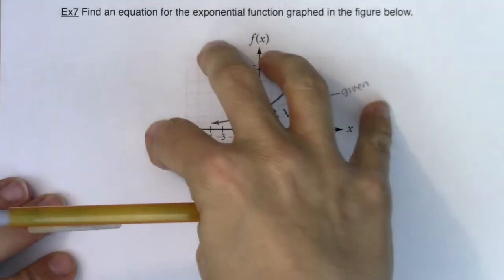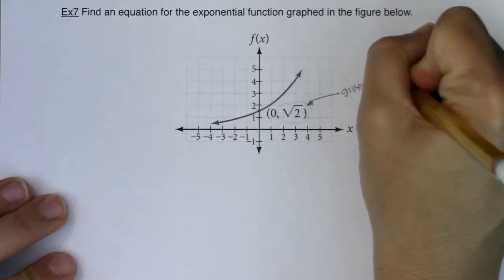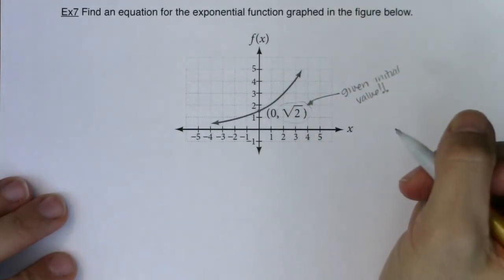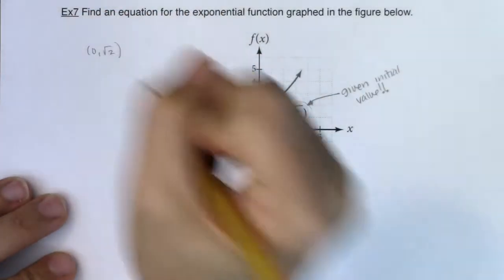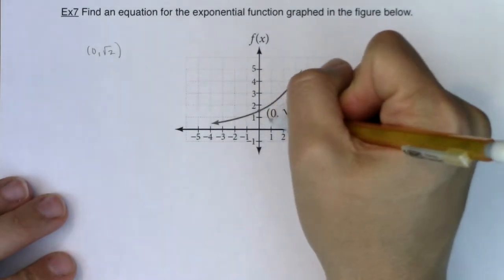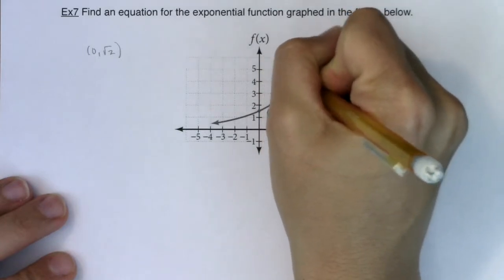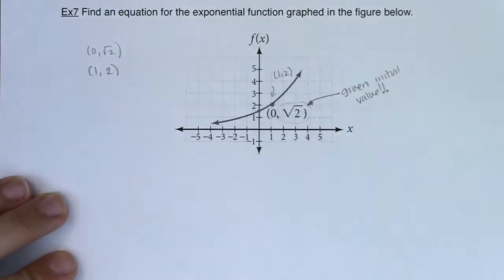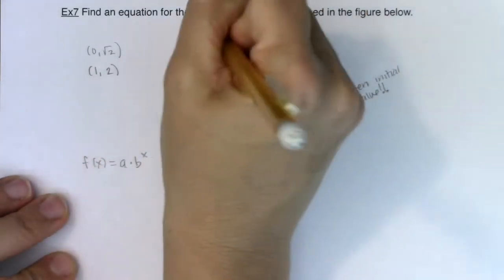So this example is similar to example 5 in that I was given the initial value. My initial value is always the y-coordinate of my y-intercept. So I see one of my ordered pairs at 0, √2, and I like to look for ordered pairs that hit on a grid mark. I can see this one is hitting at 1, 2. That will be my other ordered pair. Now from those two ordered pairs, I can use algebra and find my exponential model.